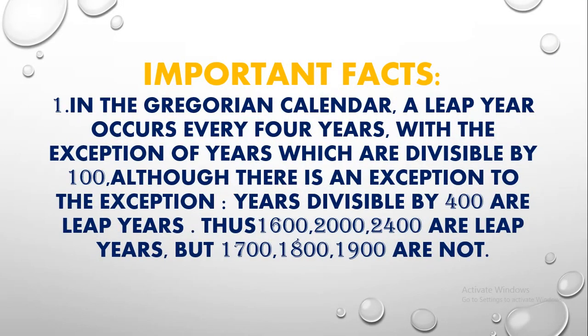Now some important facts. Point one: in the Gregorian calendar, a leap year occurs every four years, with the exception of years divisible by 100 — although there is an exception to the exception: years divisible by 400 are leap years.